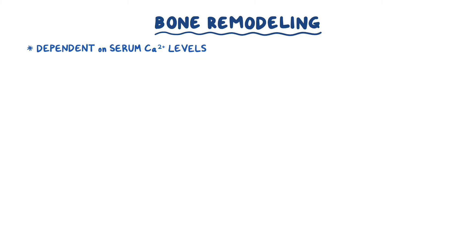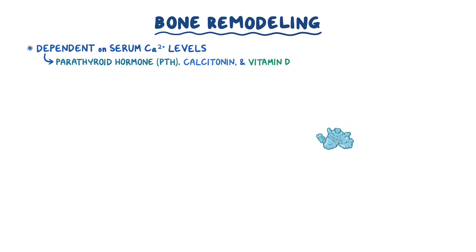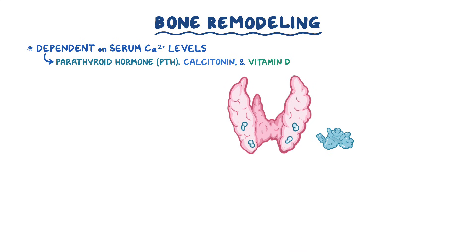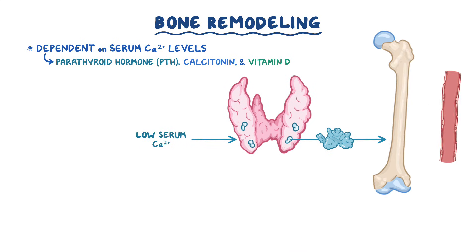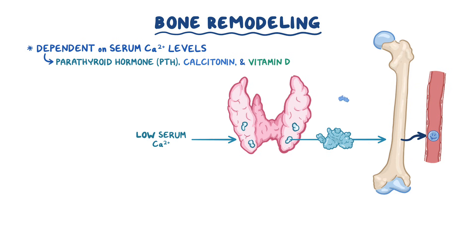Bone remodeling as a whole is highly dependent on serum calcium levels, which in turn are kept in the normal range by a balance between parathyroid hormone, or PTH, calcitonin, and vitamin D. Parathyroid hormone is produced by the parathyroid glands in response to low serum calcium, and it increases bone resorption to release calcium into the bloodstream. Calcitonin is produced by the thyroid gland in response to high serum calcium, so it opposes the action of PTH, therefore promoting bone formation and decreasing bone resorption.